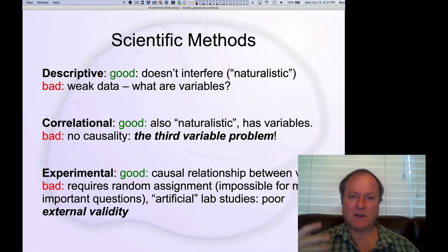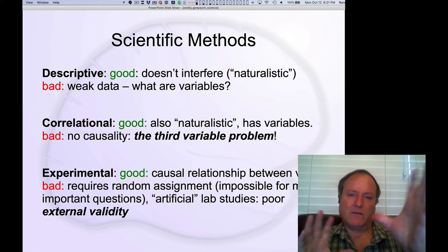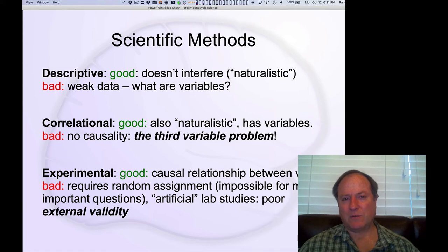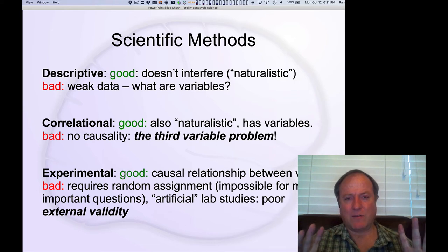And so it gives you a good understanding of how these different variables are operating in the real system. But the critical problem with correlational approaches is that they do not tell you about causality. And this is a fundamental problem. Everybody assumes that if you observe a correlation, that there must be some causal relationship among those variables. And that's just absolutely not true.